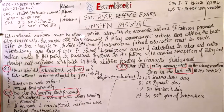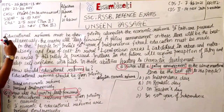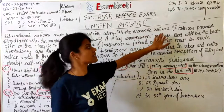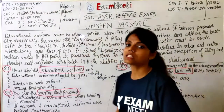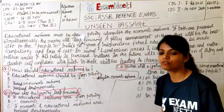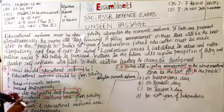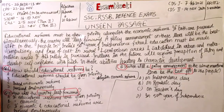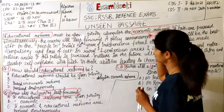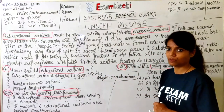Chalye — 'Educational reforms' padhte hain. Educational reforms must be given priority along with the economic reforms. Yani ki jo educational, shiksha ki field mein reforms chahiye, jo badlaav chahiye, unko bhi priority di jaani chahiye, aarthik reforms ke saath. Aarthik badlaav ke saath-saath shiksha jagat mein bhi sudhar chahiye. Next line: If both are pursued simultaneously, the country will leap forward. Aur yahan se donoN answers mil gaye hain.